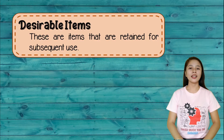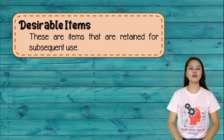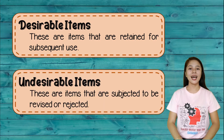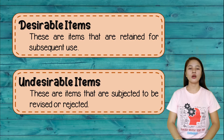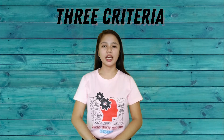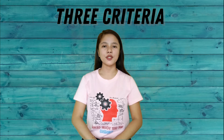Desirable items are those that are retained for subsequent use, while undesirable items are subjected to revision or rejection. There are three criteria in determining desirable and undesirable items.